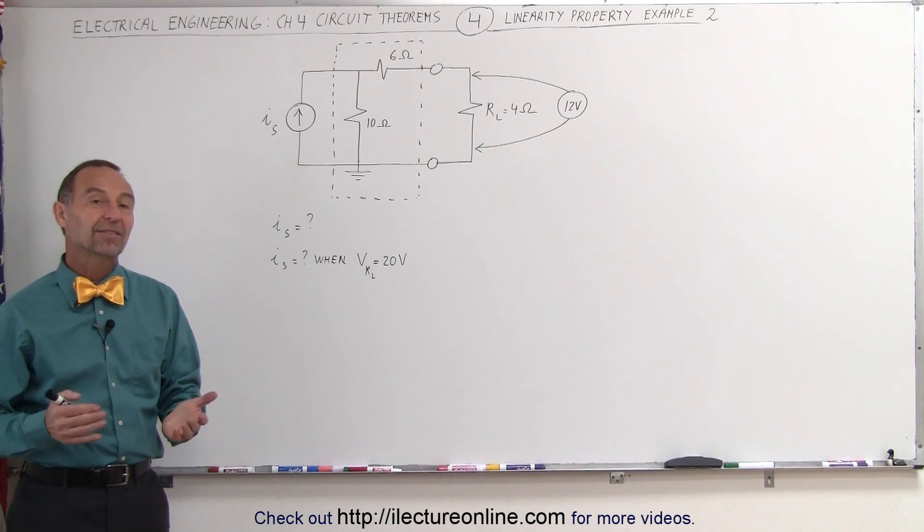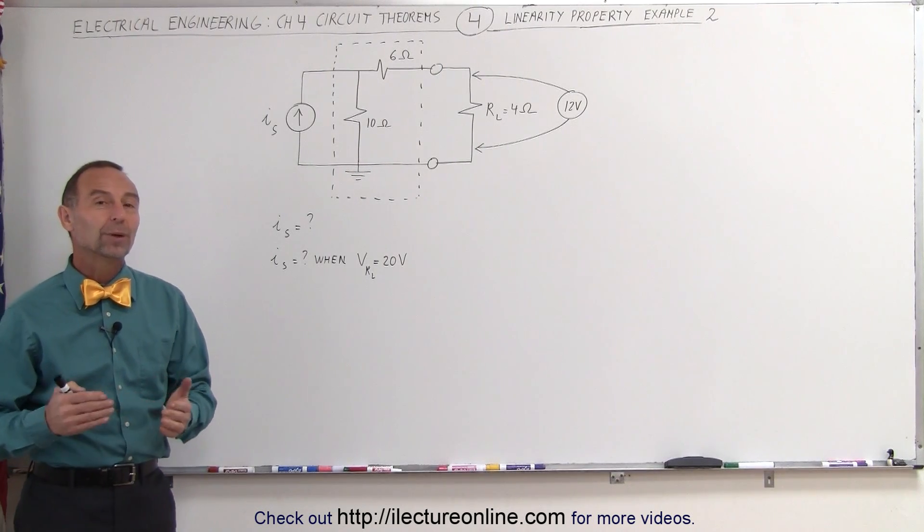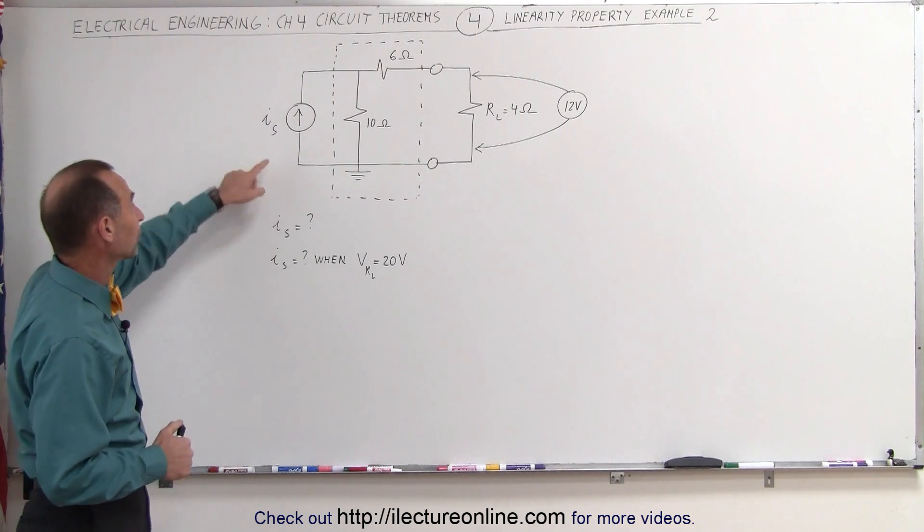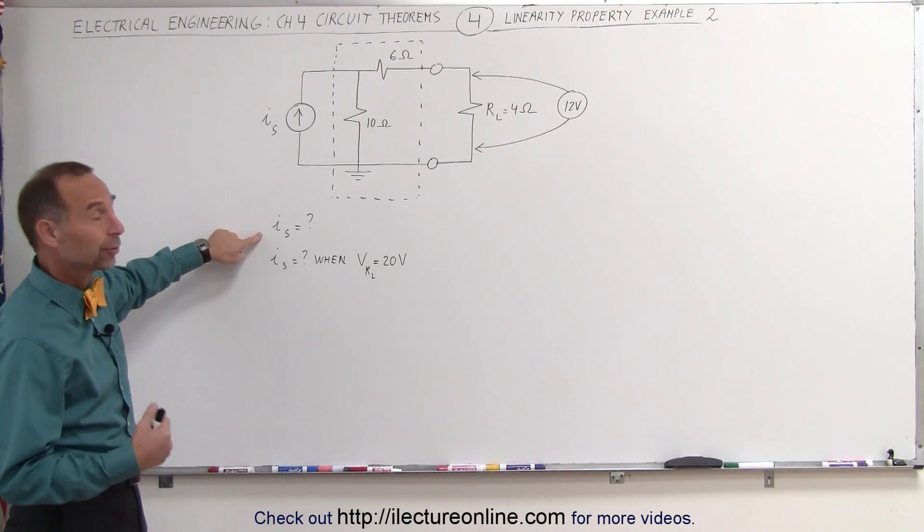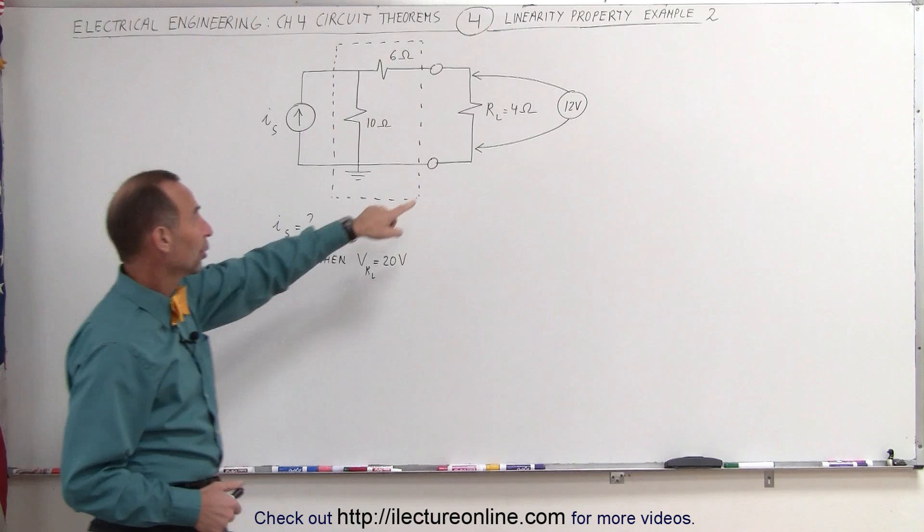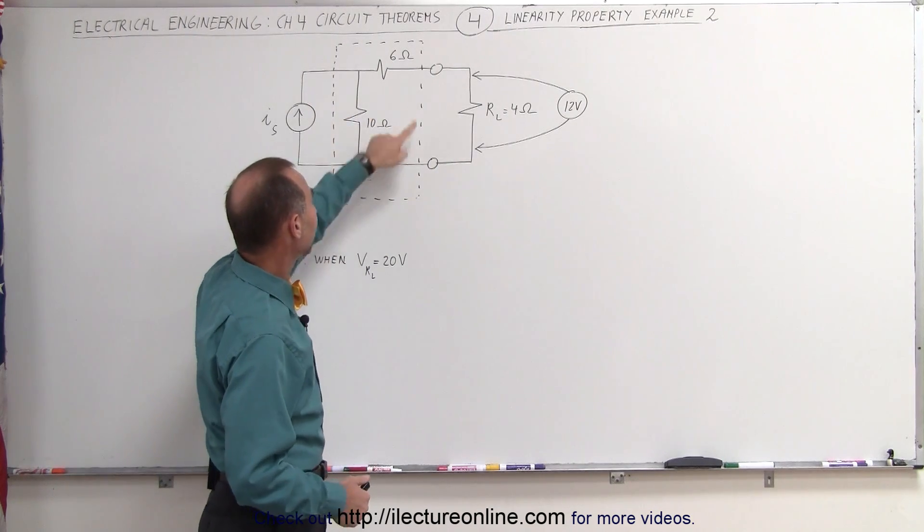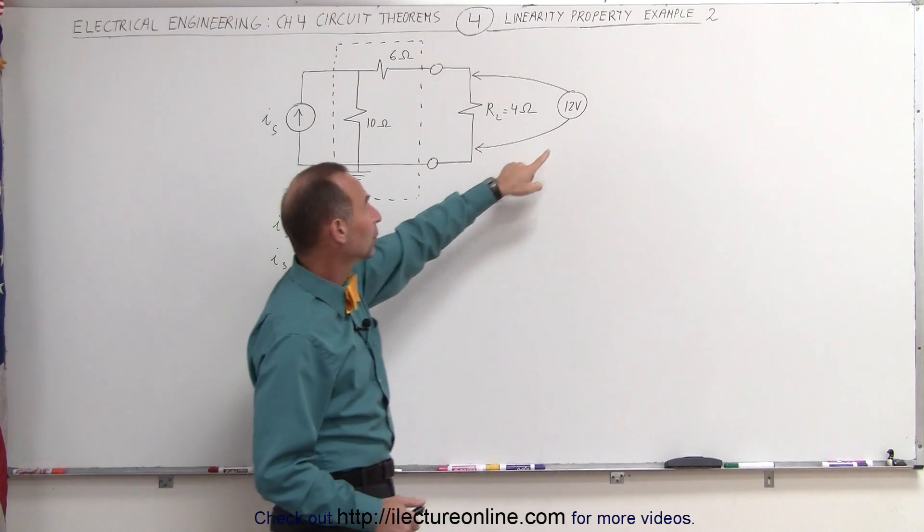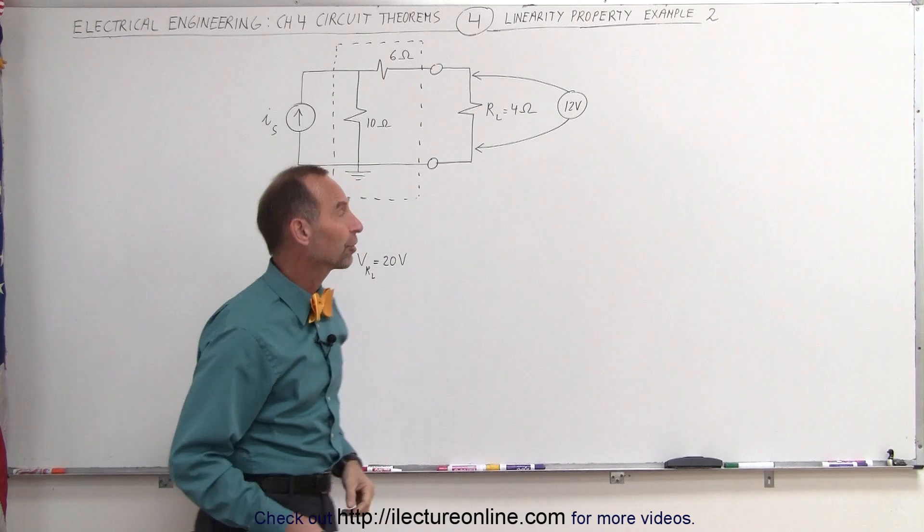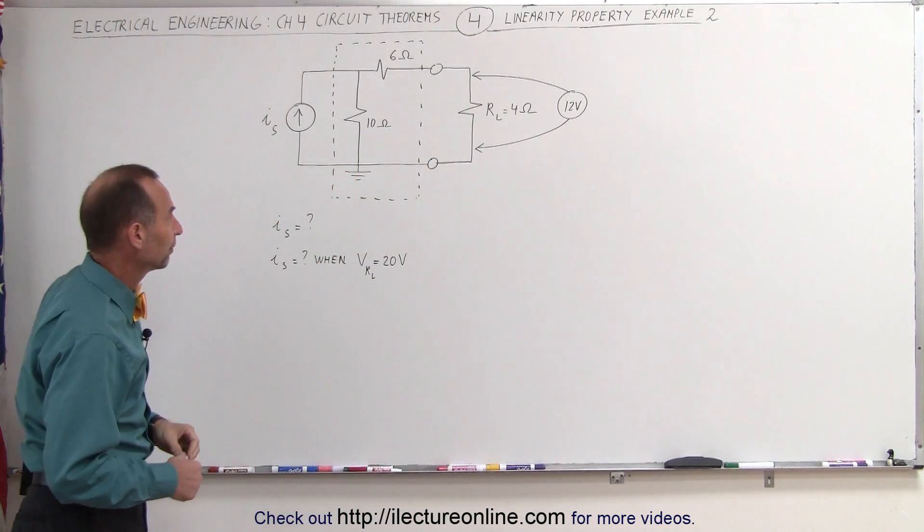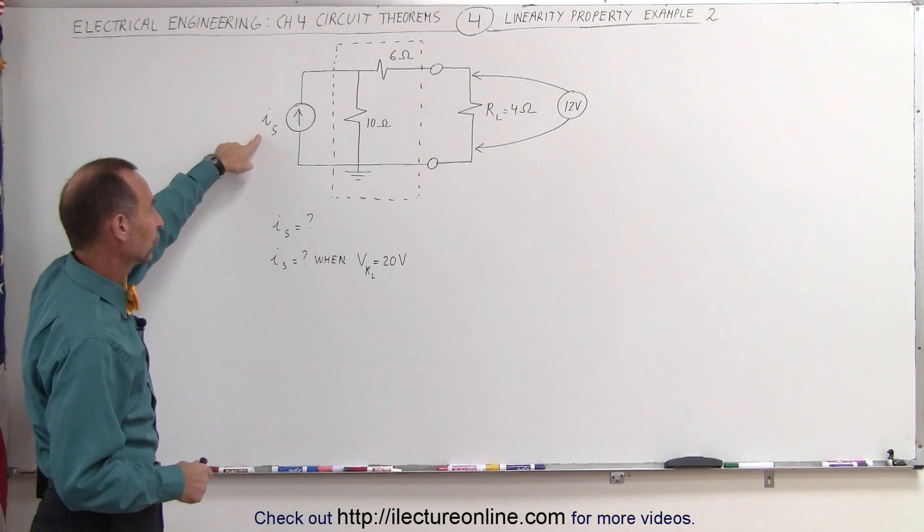Welcome to ElectronLine. Our next example of the linearity problem deals with a current source. Here we have the current source for which we need to find the current value. We have a load resistor connected to the linear circuit, and we know that there's a 12 volt potential difference across the load resistor. So what is the current through the current source?